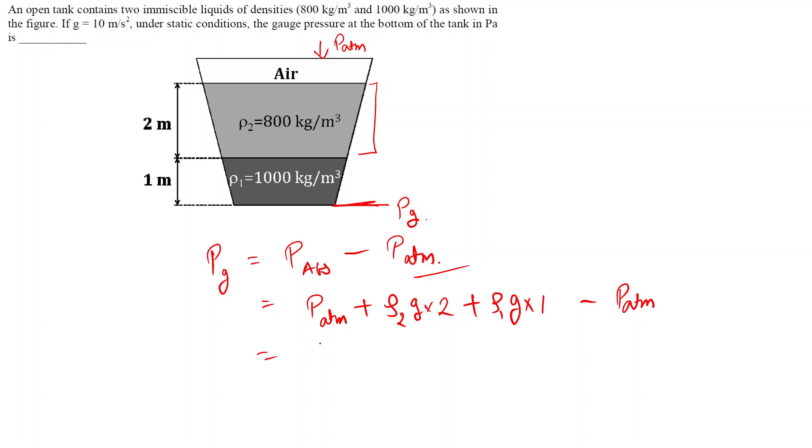We can replace the values. P_atm will get cancelled out. ρ₂ is 800, the value of g we have been given as 10 meter per second square into 2, plus ρ₁ is 1000 into 10 into 1.